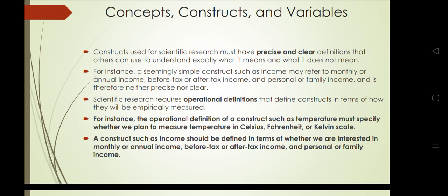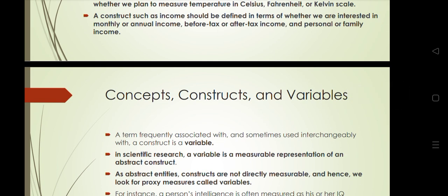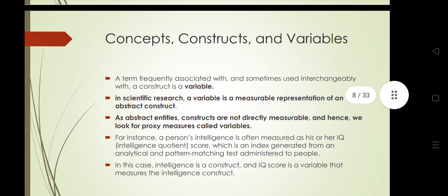Scientific research requires operational definitions that define constructs in terms of how they will be empirically measured. For example, a construct such as temperature must specify whether we plan to measure it in Celsius, Fahrenheit, or Kelvin scale. A construct such as income should be defined in terms of whether we are interested in monthly or annual income.